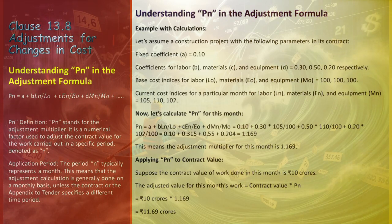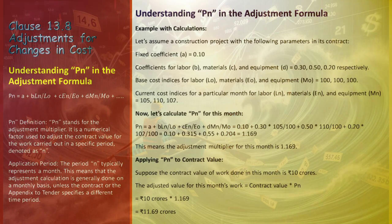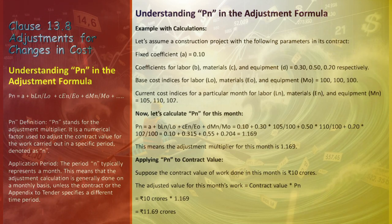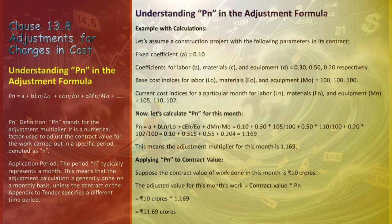Let's apply PN to a hypothetical construction project. The contract details are: Fixed Coefficient A = 0.10; Coefficients for labor B = 0.30, materials C = 0.50, equipment D = 0.20. Base cost indices for labor (L0), materials (E0), equipment (M0) are each 100. Current cost indices for a particular month: labor (LN) = 105, materials (N) = 110, equipment (MN) = 102. Computing PN: PN = 0.10 + 0.315 + 0.55 + 0.204 = 1.169. This result indicates that the adjustment multiplier for this month is 1.169.